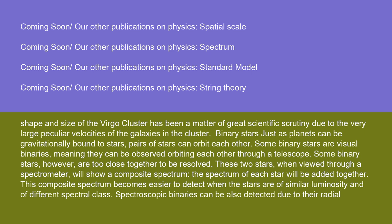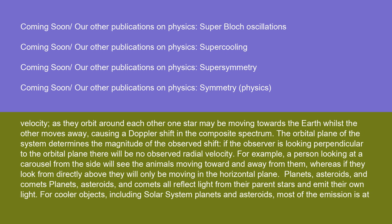Binary stars: just as planets can be gravitationally bound to stars, pairs of stars can orbit each other. Some binary stars are visual binaries, meaning they can be observed orbiting each other through a telescope. Some binary stars, however, are too close together to be resolved. These two stars, when viewed through a spectrometer, will show a composite spectrum — the spectrum of each star will be added together, which becomes easier to detect when the stars are of similar luminosity and of different spectral class. Spectroscopic binaries can also be detected due to their radial velocity — as they orbit around each other, one star may be moving towards the Earth whilst the other moves away, causing a Doppler shift in the composite spectrum. The orbital plane of the system determines the magnitude of the observed shift; if the observer is looking perpendicular to the orbital plane, there will be no observed radial velocity.